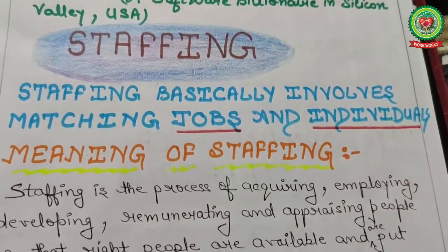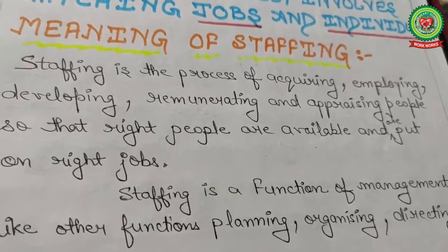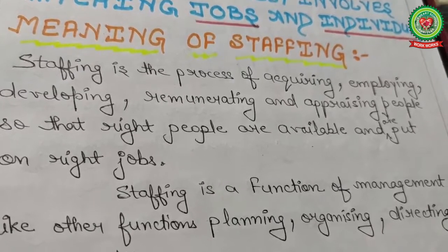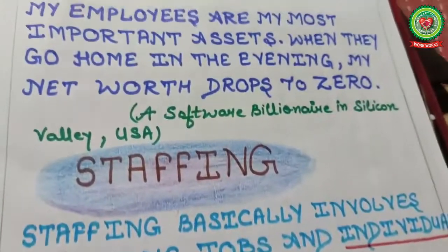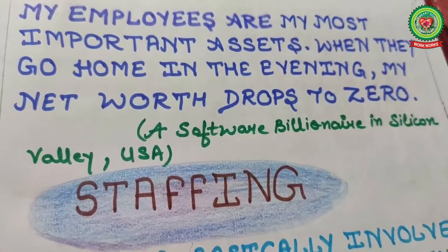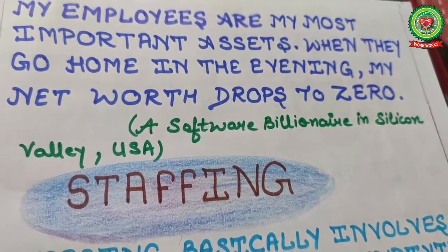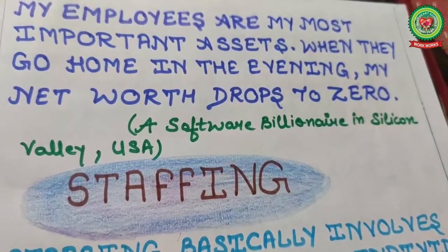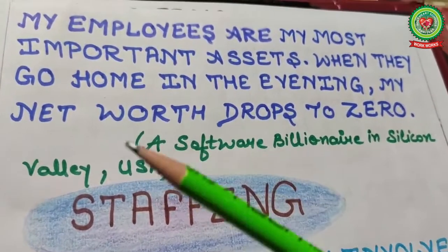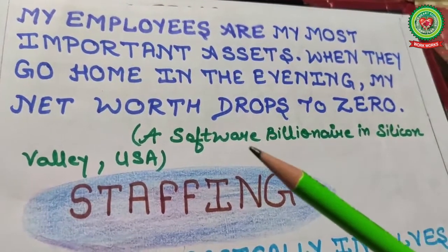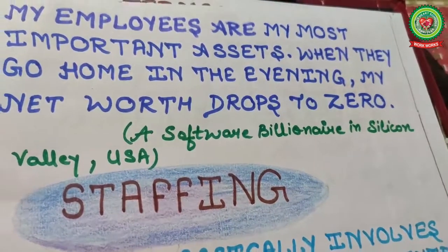What is staffing? Staffing basically involves matching jobs and individuals. Staffing is the process of acquiring, employing, developing, remunerating, and appraising people so that the right people are available and placed at the right place. As one saying goes: 'My employees are my most important asset — when they go home in the evening, my net worth drops to zero.' This describes how human resources are a very important part of any organization, considered as an asset.